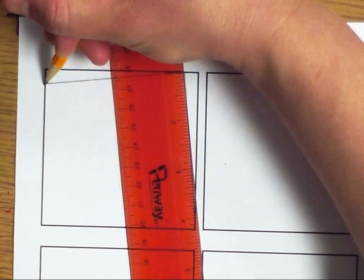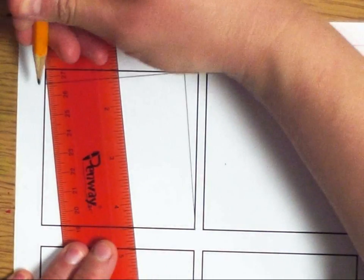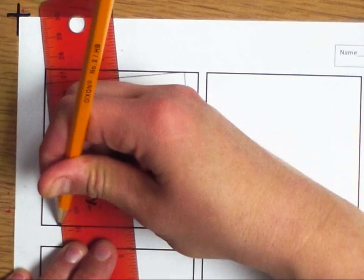Again, stop at the line. Rotate your ruler around to make a skinny triangle. Stop at the line.